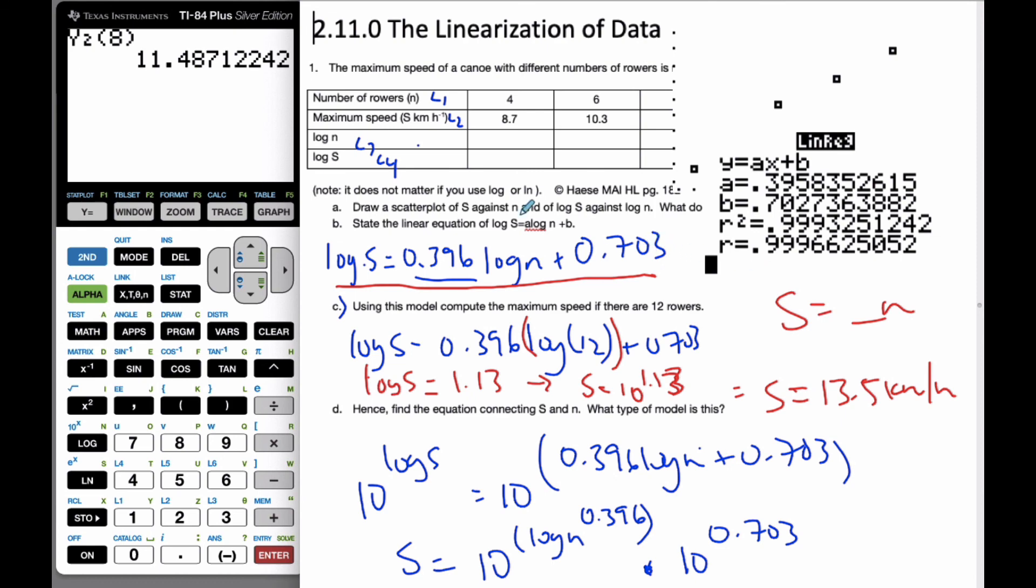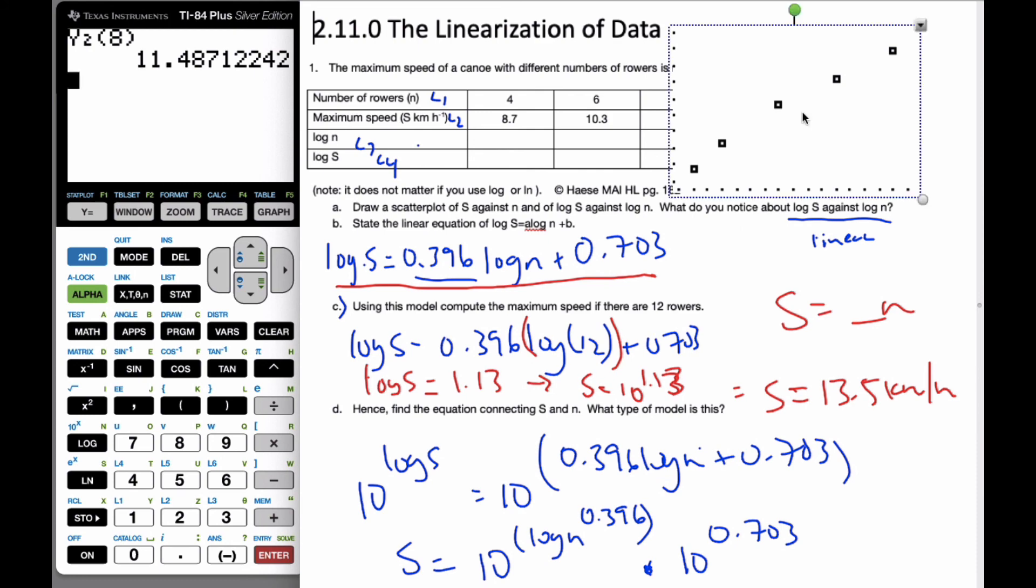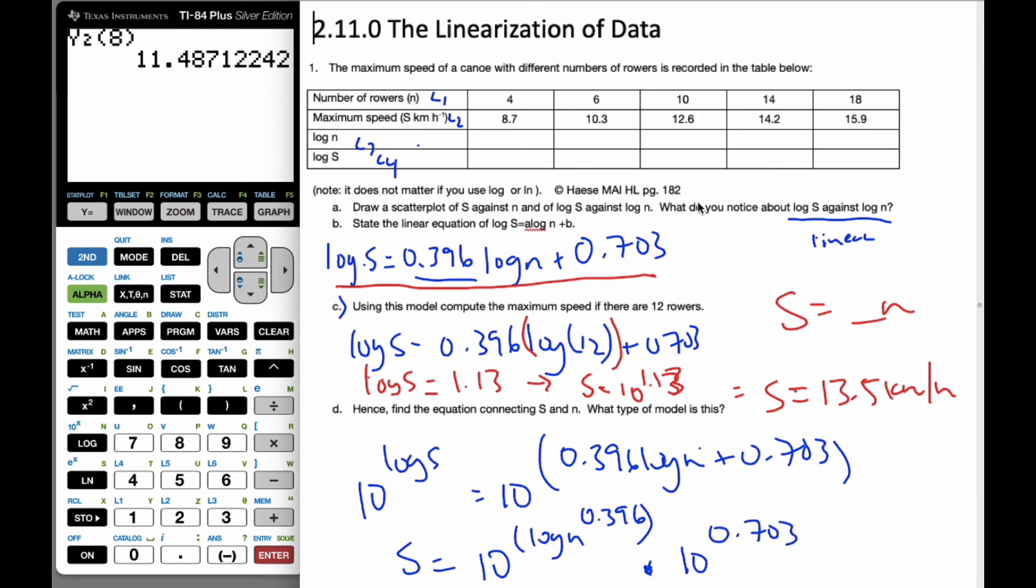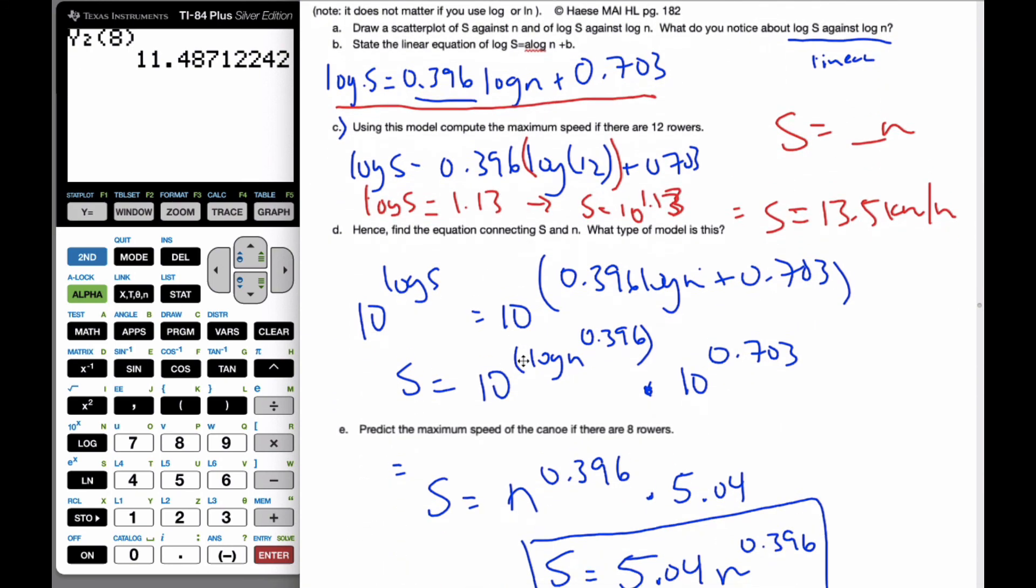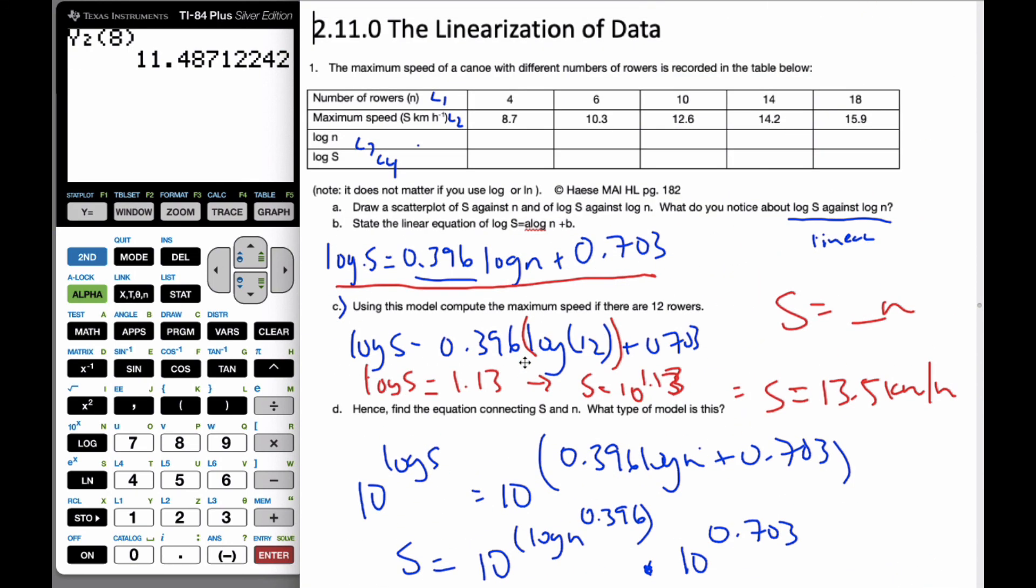So, overall, when we are trying to linearize data, we compare our different scatter plots. And we want it to be as straight as possible. And if there's a bend in it, we can probably morph it somehow to make it into a line. This time, we did logarithm, logarithm. And when we do logarithm, logarithm, it ends up being a power function. So, now, let's go.